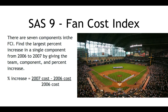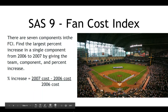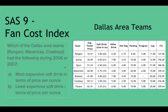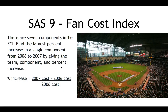There are seven components in the FCI. Find the largest percent increase in a single component from 2006 to 2007. If you're asked an increased percentage, the best way to do it is find the difference between the two costs — the change in the amount — and divide by the original, or the first year's cost. So it's 2007 minus 2006, divided by 2006.